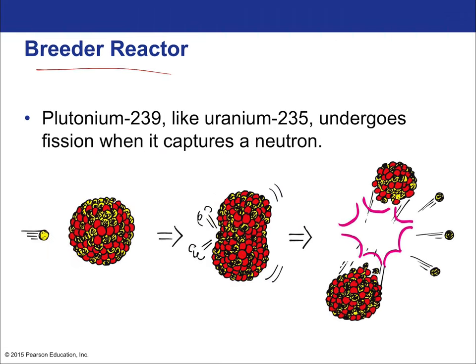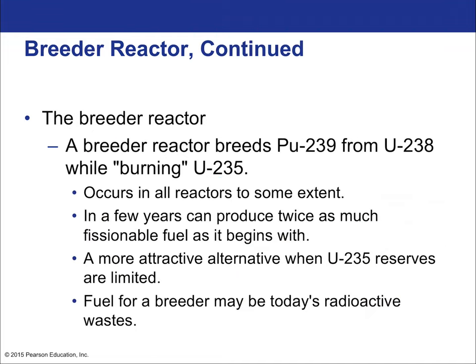Another type is the breeder reactor, where plutonium-239 — like uranium-235 — undergoes fission when it captures a neutron. The breeder reactor uses uranium-238 to breed plutonium-239 as a byproduct while burning uranium-235. In a few years, it can produce twice as much fissionable fuel as it started with, making it an attractive alternative when uranium-235 reserves are limited. Fuel for breeder reactors may be today's radioactive wastes.